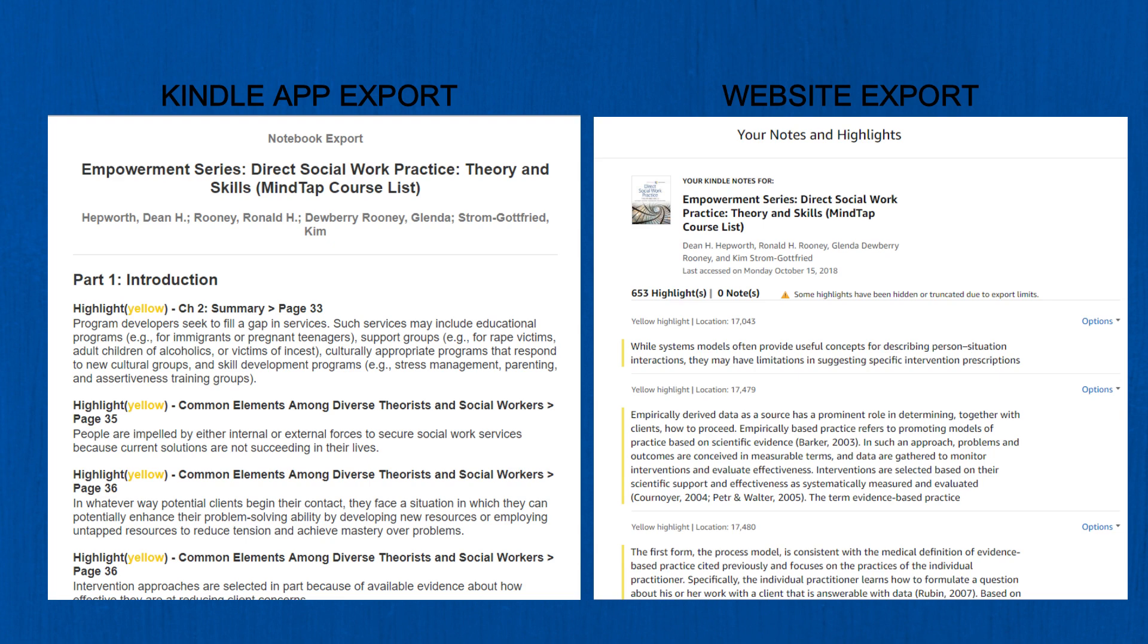You can see that the website export gives only location number which I find kind of useless. The iPad export gives you the page number instead and it provides the title and the section of the book that the highlight was found in. I like all of this additional information.